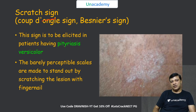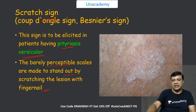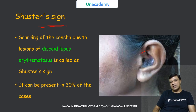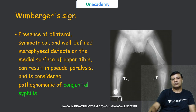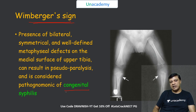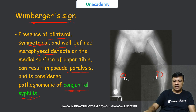The scratch sign is a feature of pityriasis versicolor, where barely perceptible scales stand out on stroking the skin with the fingernail — also called the coup d'ongle sign. The Schuster sign is scarring over the concha of the ear in discoid lupus erythematosus, seen in 30% of DLE cases. The Wimberger sign is a manifestation of early congenital syphilis, characterized by bilateral symmetrical well-defined metaphyseal defects over the medial side of the upper tibia, resulting in pseudoparalysis.